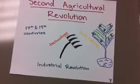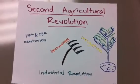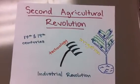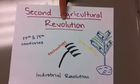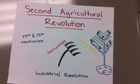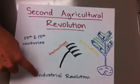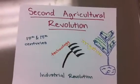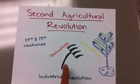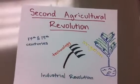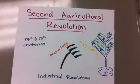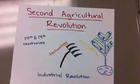Many years later, in the 17th and 18th centuries, agriculture in Europe underwent significant improvements called the Second Agriculture Revolution. It coincided with the Industrial Revolution, which provided new technologies such as seed drills, the mechanical reaper, tractor trailers, and the steel plow. Irrigation was a new technology but was limited by competition for water.